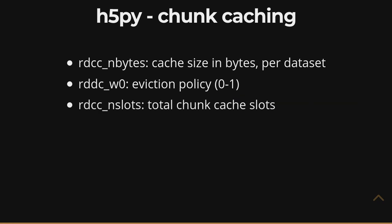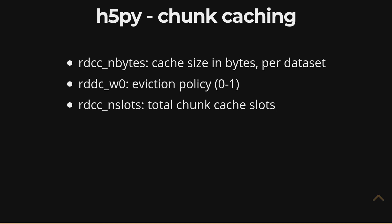The third parameter is rdcc_nslots. All of these parameters are RDCC, which stands for raw data chunk cache — that's the HDF5 term for it. nslots simply defines the total chunk cache slots across the entire file. It's a pointer table maximum that describes how many total chunks across all datasets in a given file can live in the cache. H5Py sets that default number to 512. Depending on your workload you may need more or less, but it's important to keep in mind your chunk shape and how much memory you're allocating for the chunk cache.